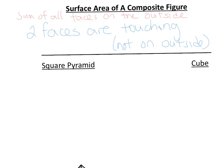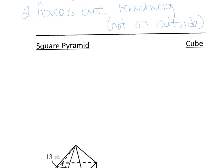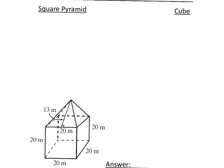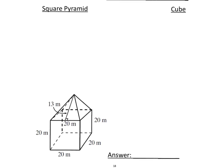Now let's look at two different figures put together: a square pyramid on top of a cube. To remind ourselves — the surface area of a composite figure is the sum of all faces on the outside, and the two faces that are touching are not on the outside. For the square pyramid, we know we're dealing with four congruent triangles. We need the base and height: 13 times 20 divided by 2 gives us 130, and with four triangles we multiply by 4, equaling 520 meters squared.